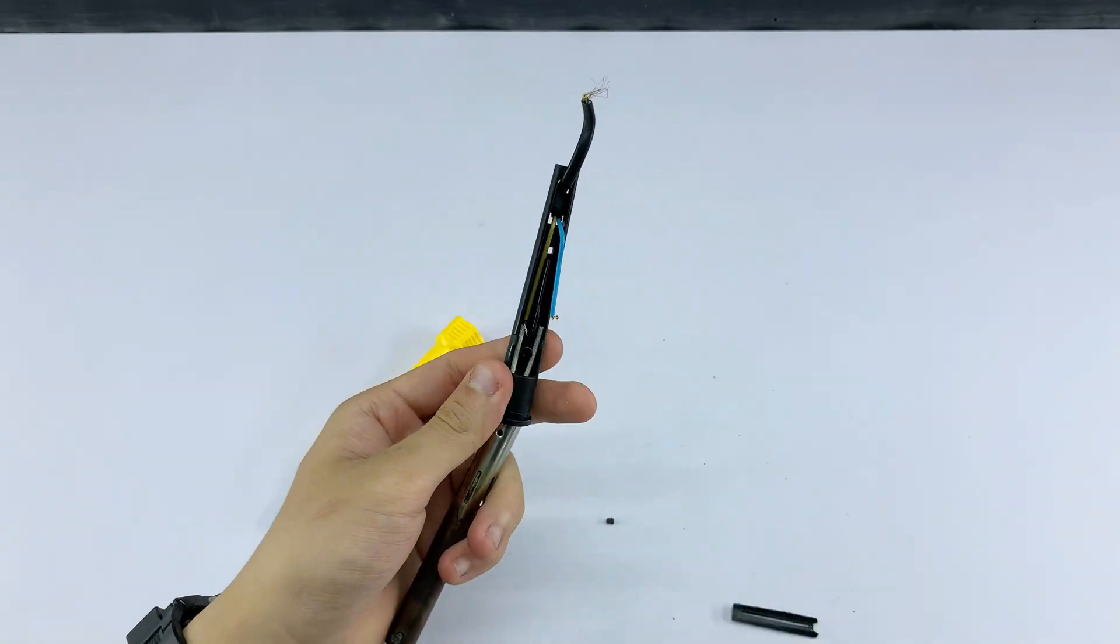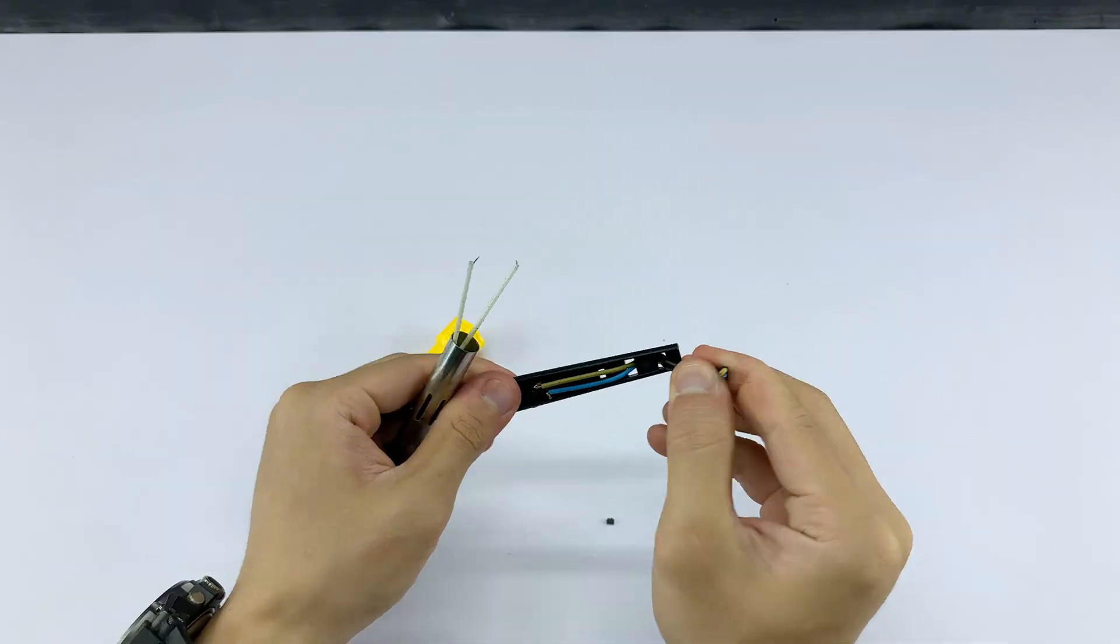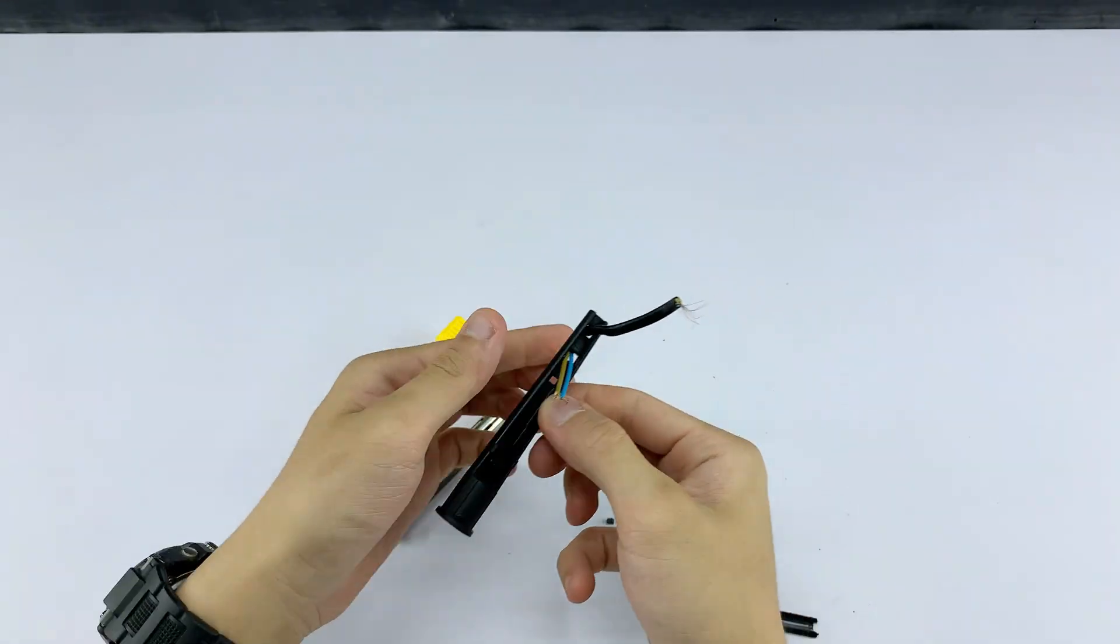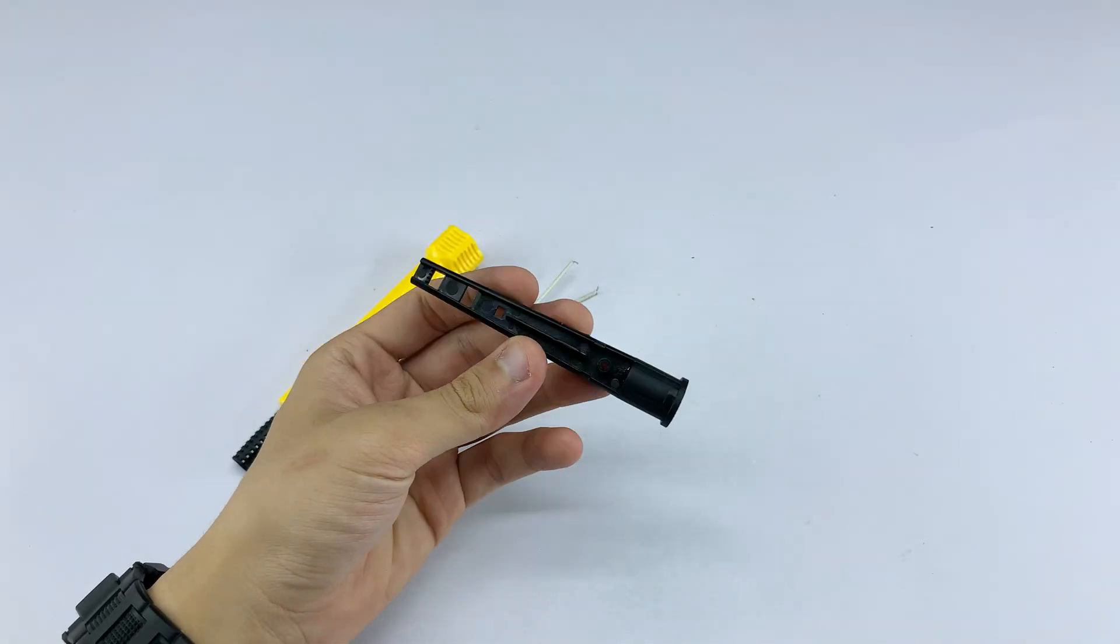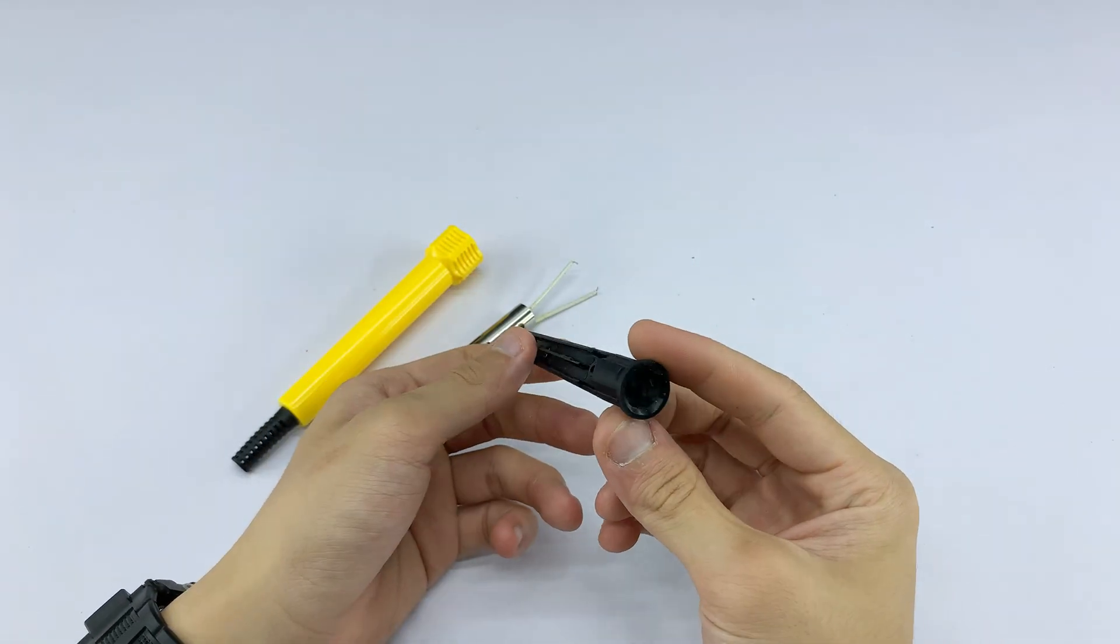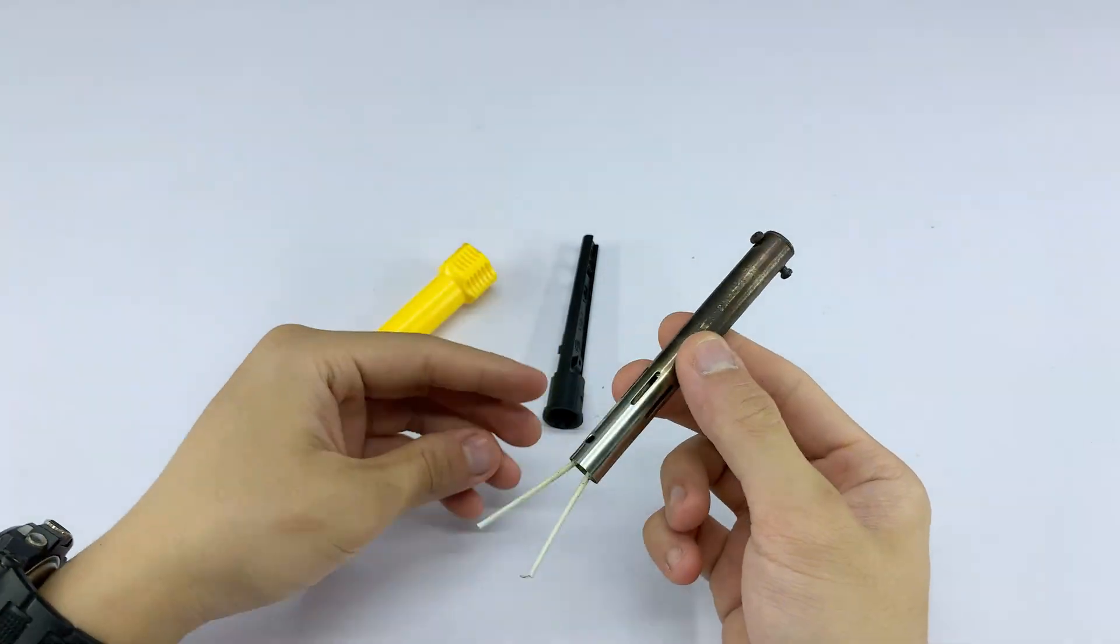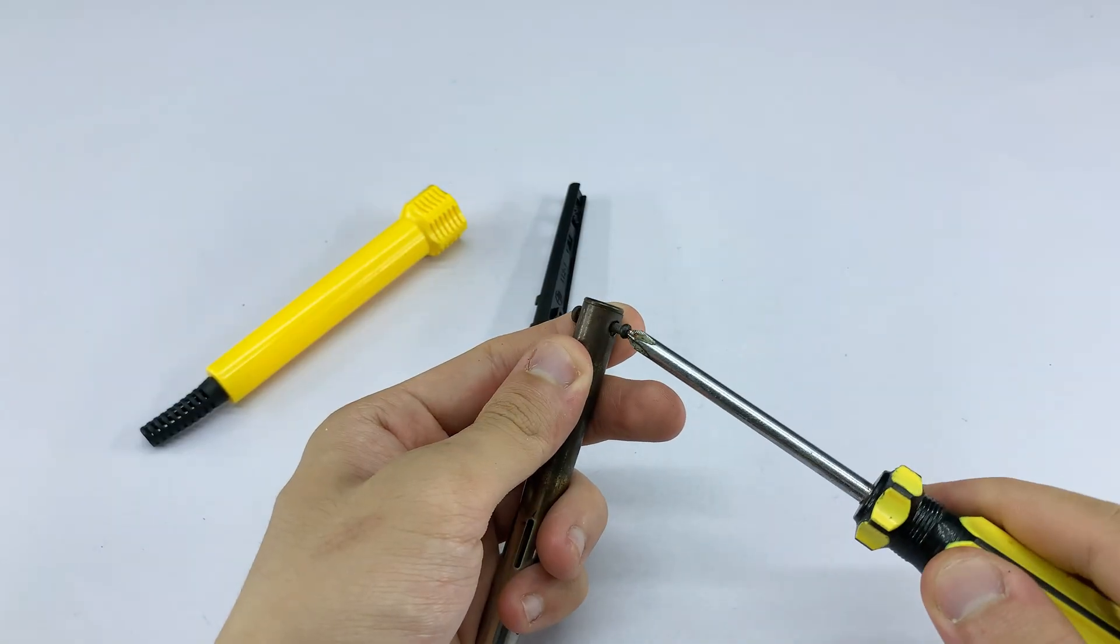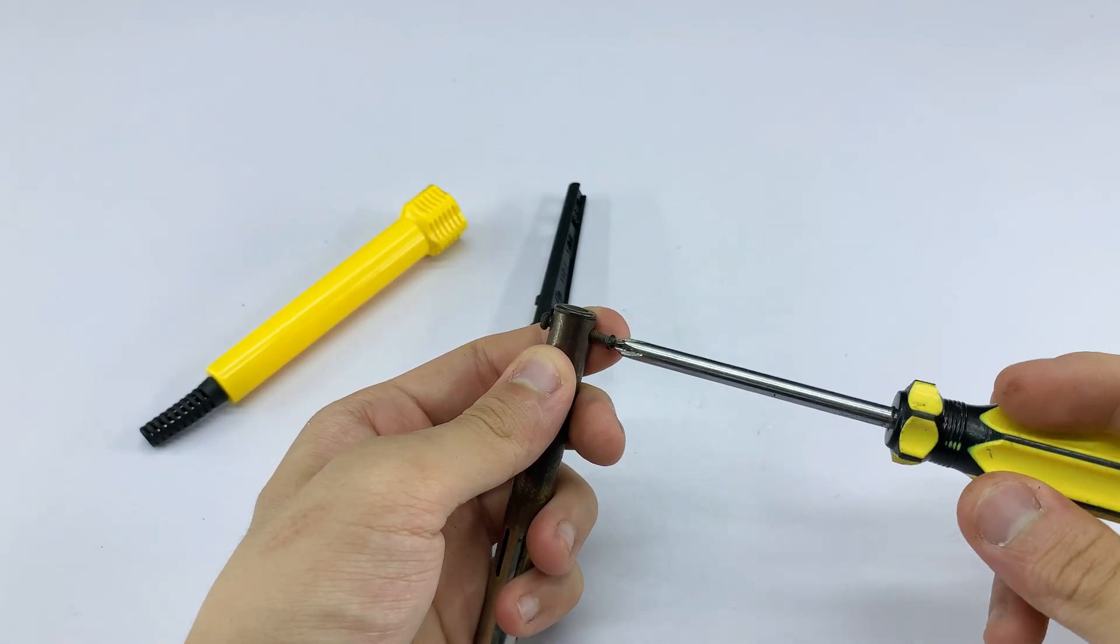Next, I'm unscrewing the black inner casing. Inside you can see the wiring and the main ignition mechanism. I'm carefully extracting these components. I'll use pliers to snip some of the wires. I'm removing the remaining components, separating the various metal and wire pieces.